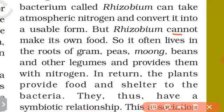Rhizobium cannot make its own food, so it often lives in the roots of gram, peas, beans, and other legumes. It converts atmospheric nitrogen into a usable form and provides nitrogen to the leguminous plant. This is another example of a leguminous plant and Rhizobium bacteria working together.